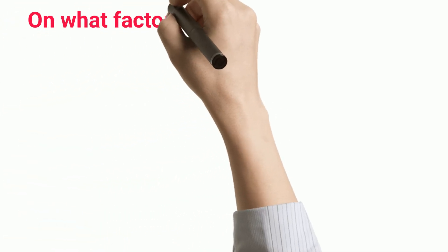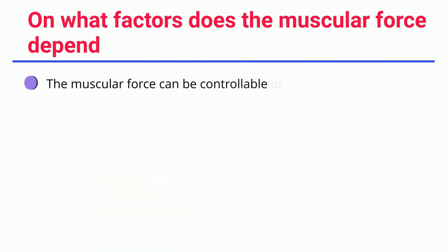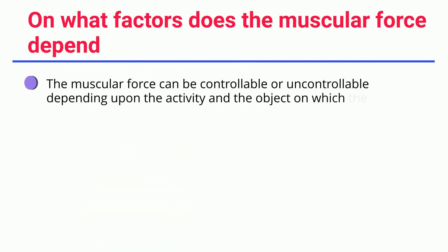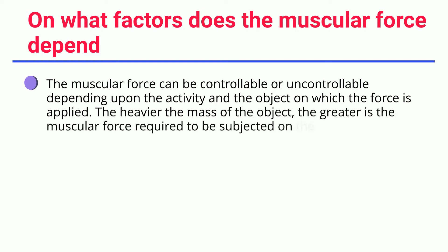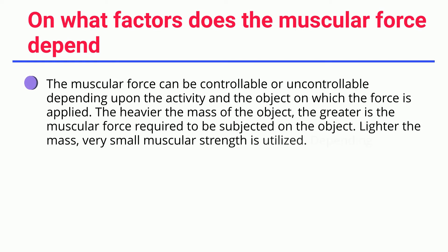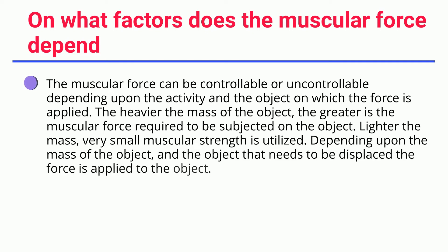On what factors does muscular force depend? Muscular force can be controllable or uncontrollable depending upon the activity and the object on which the force is applied. The heavier the mass of the object, the greater the muscular force required. The lighter the mass, the smaller the muscular strength utilized. Depending upon the mass of the object and the displacement needed, the force is applied accordingly.